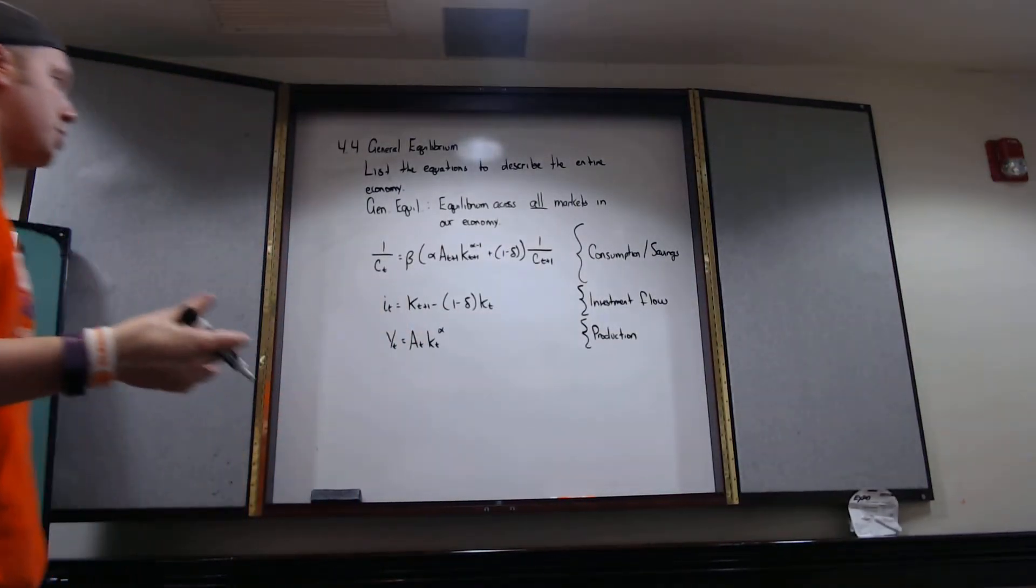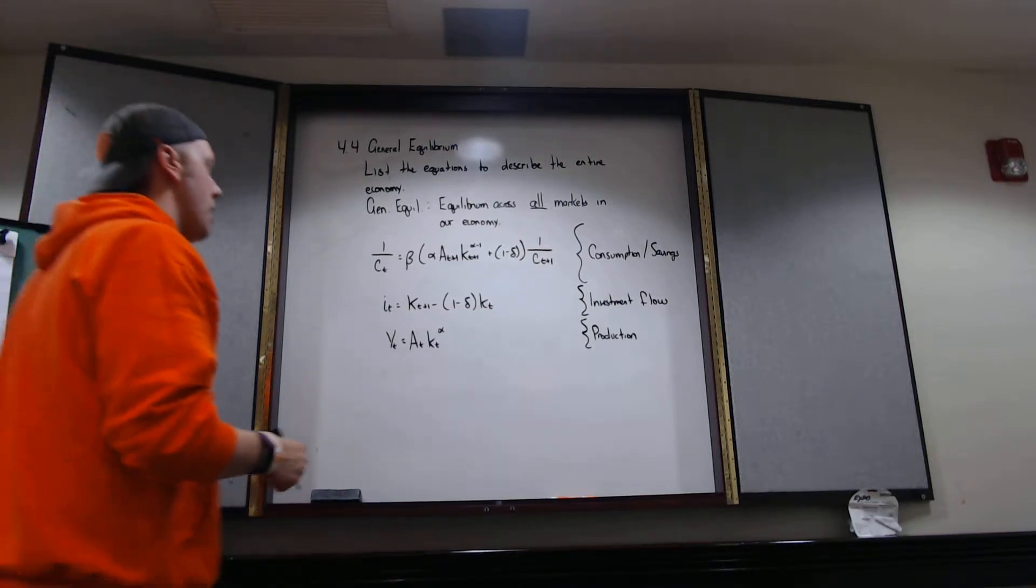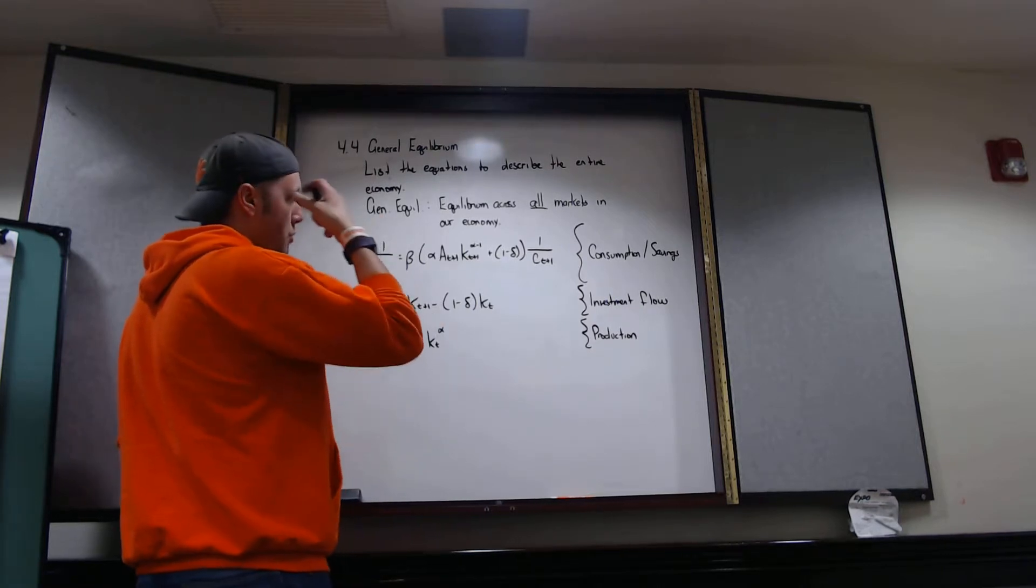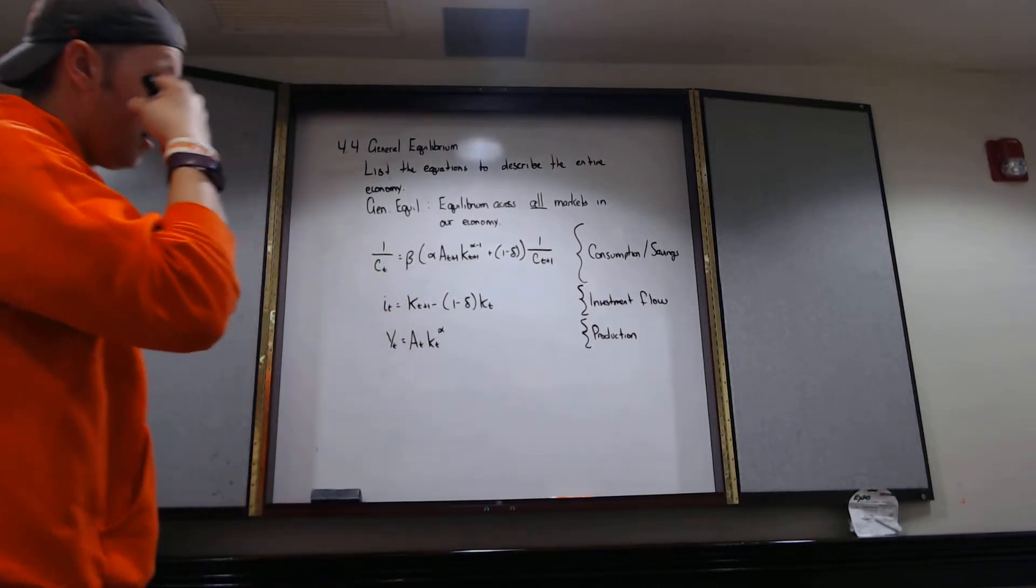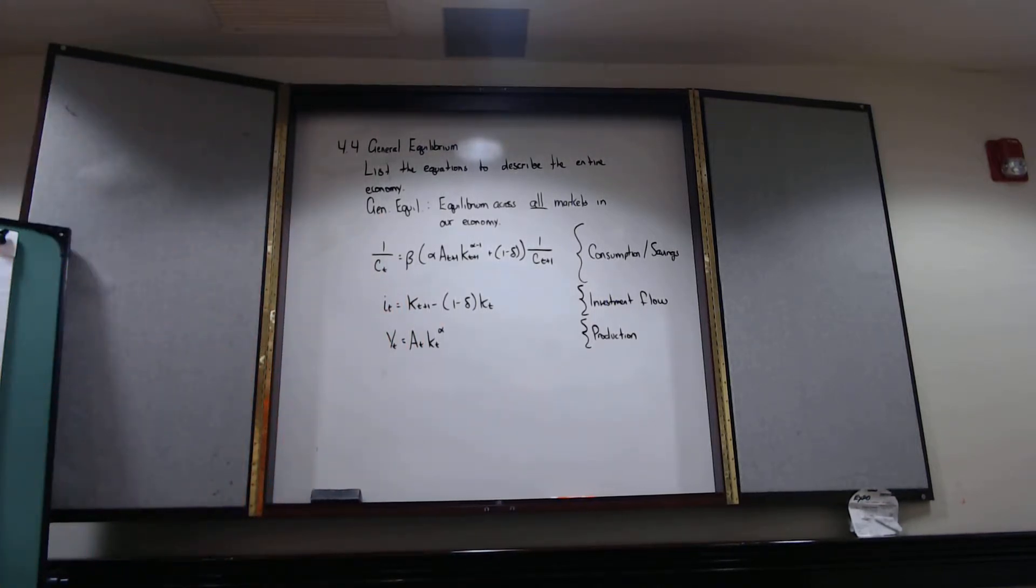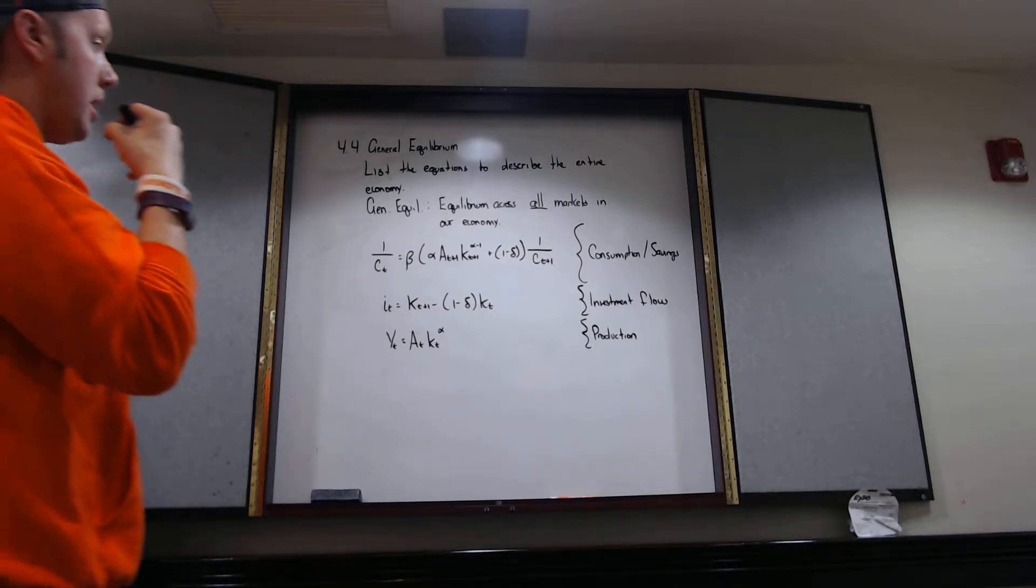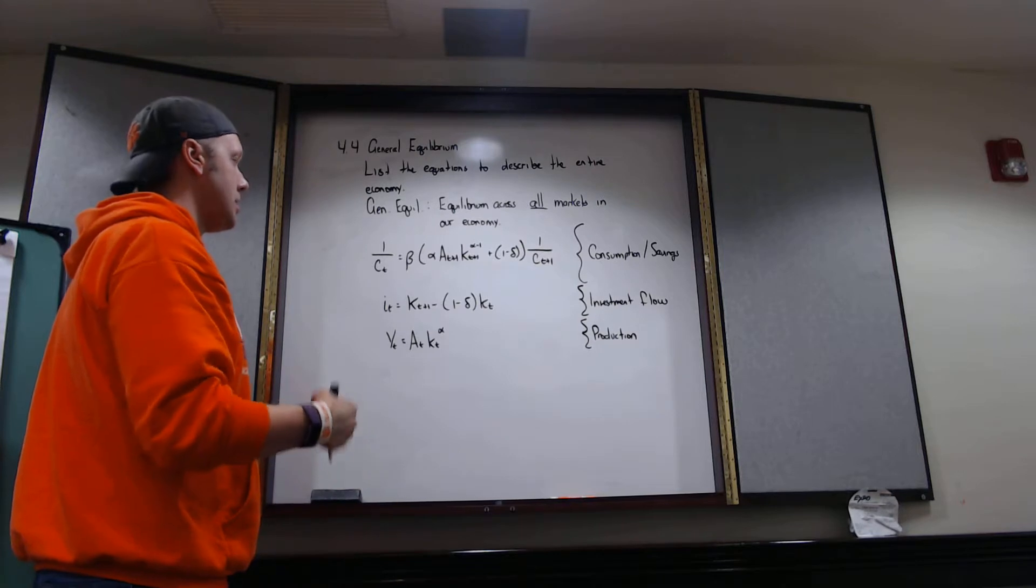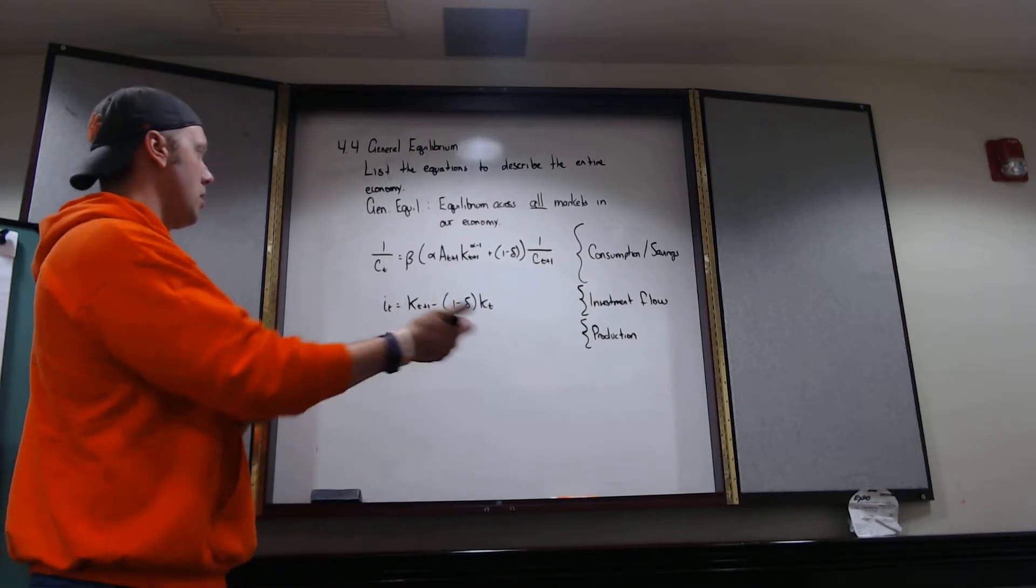Obviously we need to describe how production is playing into this model, the role that production plays in the model. We need to figure that out. So we need to have an equation for production. So we got that. But then what we also need to do is we need to set up a condition or a constraint, really, to make sure that what we're consuming and what we're investing is not exceeding what we're producing.